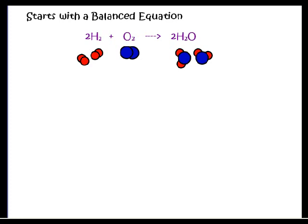The balanced equation is our key — it's the recipe for all of this. Here I have a balanced equation where hydrogen and oxygen are forming water. These coefficients tell us the proportions of each: two molecules of hydrogen and one molecule of oxygen give two molecules of water in the end. Kind of like a recipe — if I have two of these and one of these, then I'm going to make two waters.